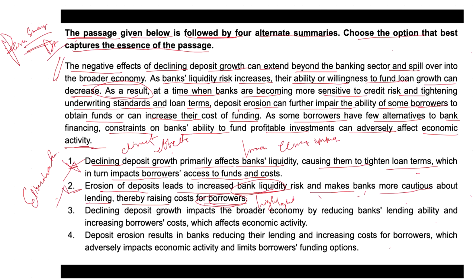Option three states: declining deposit growth impacts the broader economy by reducing bank lending ability and increasing borrower costs, which affect economic activity. This summary effectively captures the essence of the passage by addressing both the effects on banks and borrowers and the broader economic impact — affecting economic activity. So this is the perfect summary, which covers everything.